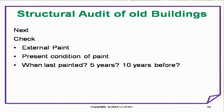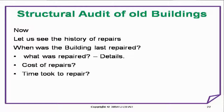Check external paint — present condition of paint, when was the building last painted: five years, ten years before, or never painted. Now let us see the history of repairs: when was the building last repaired, what were the repair details, cost of repairs, time taken to repair, and was the repair effective? We have now collected all possible data. What do you do next?